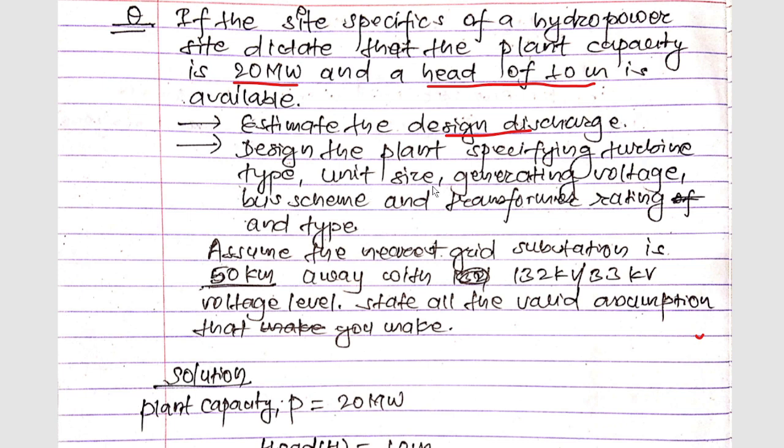We also need to determine transformer ratings and types. Assume the nearest grid service station is 50 kilometers away with 132/132 kV / 33 kV voltage levels. State all the validation assumptions that you make.